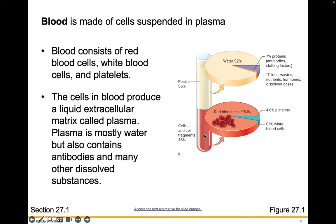About 45% would be cells and other fragments. The plasma itself is 92% water, 7% proteins including antibodies and clotting factors, and about 1% ions — things like salts, waste, nutrients, hormones, and dissolved gases.